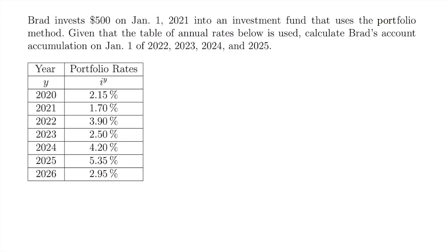Here's our first example. We have that Brad invests $500 on January 1st of 2021 into an investment fund that uses the portfolio method. Given that the table of annual rates below is used, calculate Brad's account accumulation on January 1st of 2022, 2023, 2024, and 2025.